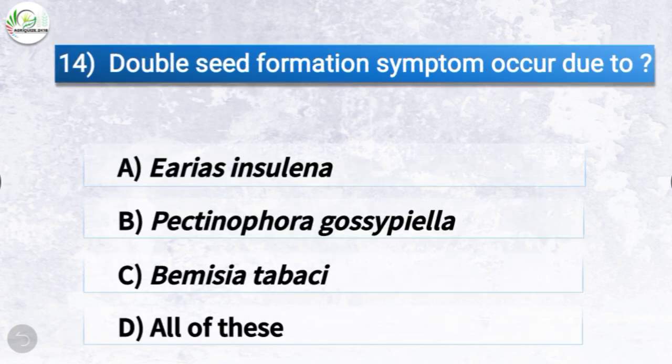Question number fourteen: double seed formation symptom occurs due to which pest? The options are Erias insulana, Pectinophora gossypiella, Bemisia tabaci, or all of these. The correct answer is option B, Pectinophora gossypiella. So double seed formation symptom occurs due to Pectinophora gossypiella.